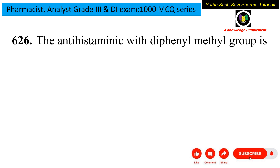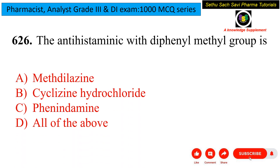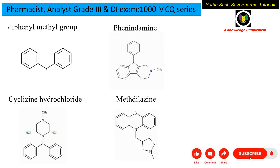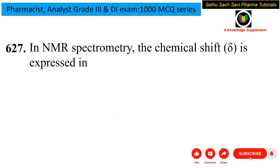Next question: which antihistaminic has a diphenylmethyl group? Options are meclizine, cyclizine hydrochloride, cinnarizine, or all of the above. The diphenylmethyl group consists of two phenyl rings attached by a methyl group. The answer is cyclizine hydrochloride, which contains the diphenylmethyl group as seen in its structure.